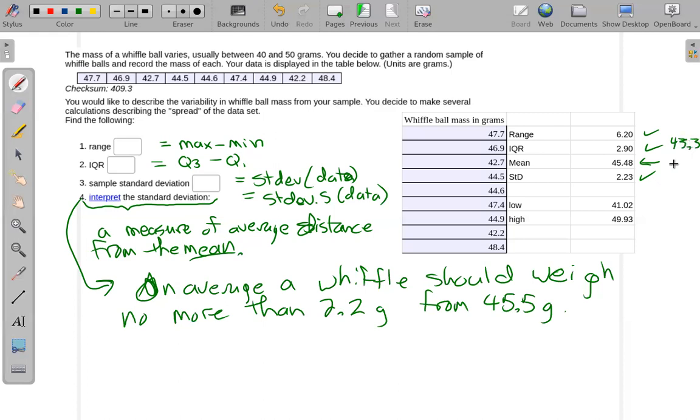And on the high end, we would get 47.7. So we could say on average, we expect most wiffle balls would be between 43.3 and 47.7 grams.